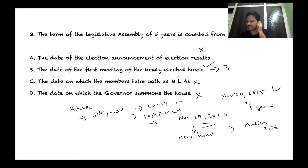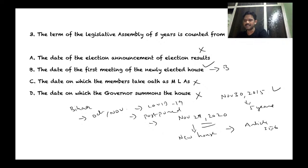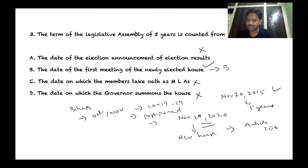If elections are not held in Bihar, the only option after November 29 is the imposition of President's Rule under Article 356 of the Constitution of India. The Election Commission requested political parties' opinions on conducting or postponing elections. Whatever the case, the assembly's term cannot be extended beyond November 29.